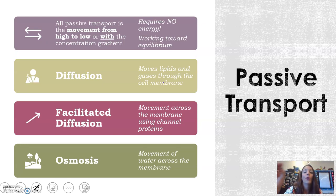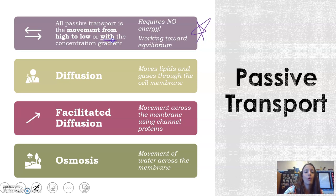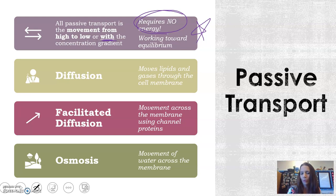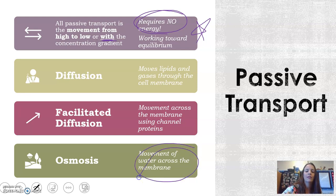The most important thing to understand about passive transport is that things move from a high to low concentration gradient, also called moving with the concentration gradient. This requires no energy, and the cells are working towards equilibrium — having the same amounts on both sides. The three types are diffusion, which moves lipids and gases through the membrane; facilitated diffusion, which uses channel proteins but still moves from high to low; and osmosis, which is specifically the movement of water.